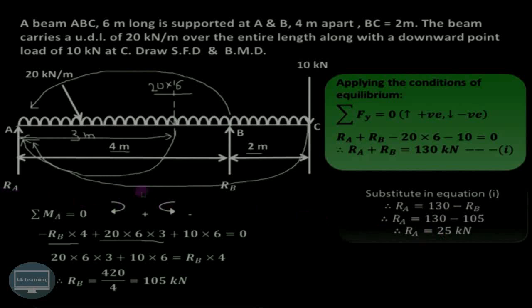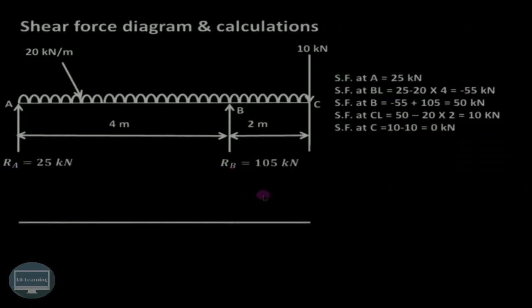Now the next step is to draw the shear force diagram. The conventions for shear forces are: upward forces are positive and downward forces are negative. Shear force at A is in the upward direction, so it is 25 kN. The shear force just to the left of B — we consider RA acting upward (positive) minus the UDL from A to B, which is 20 into 4. So 25 minus 80 equals minus 55 kN.